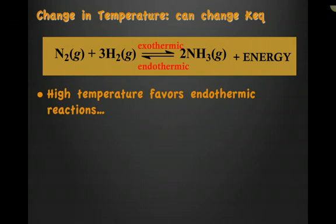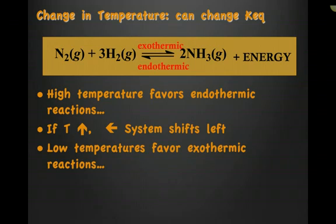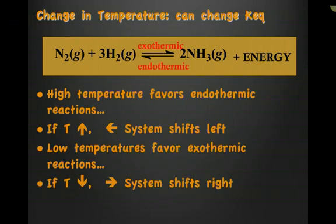High temperatures favor endothermic reactions. Therefore, if the temperature increases, the equilibrium is going to shift to the left in favor of the endothermic reaction. Low temperatures favor exothermic reactions, which means that if I decrease the temperature, the equilibrium is going to shift to the right, favoring the exothermic reaction.